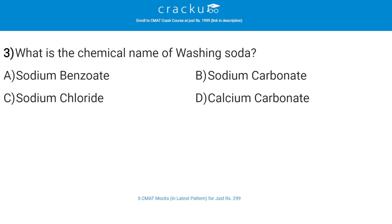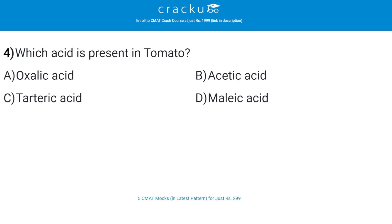The next question: what is the chemical name of washing soda? The correct answer is B — sodium carbonate, which is used for washing, especially textiles. It is a compound of sodium.